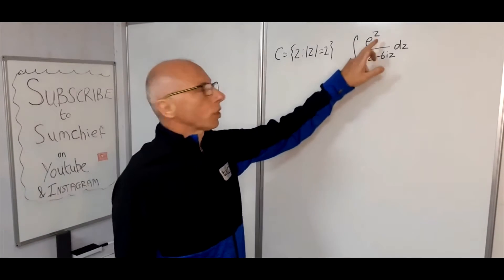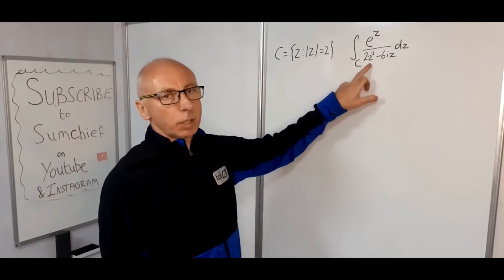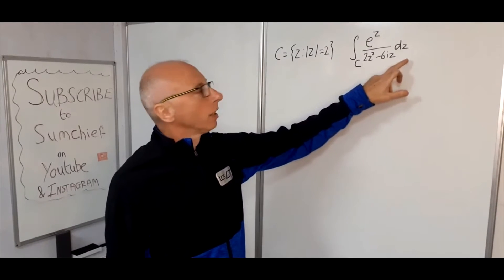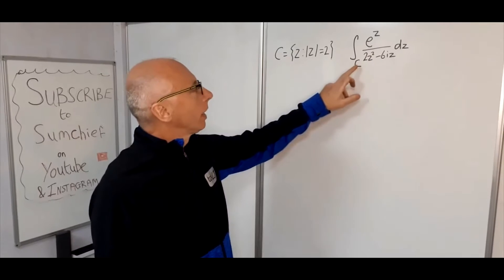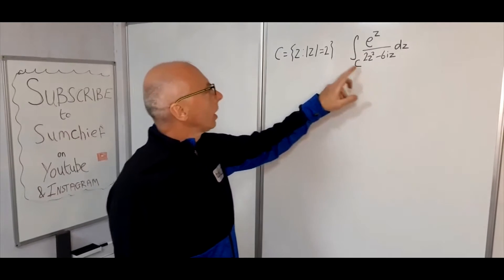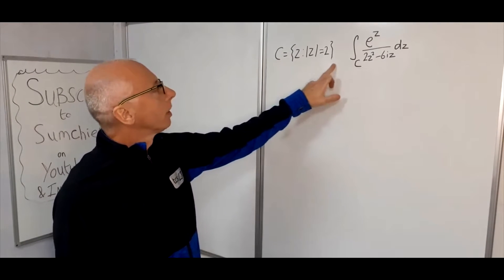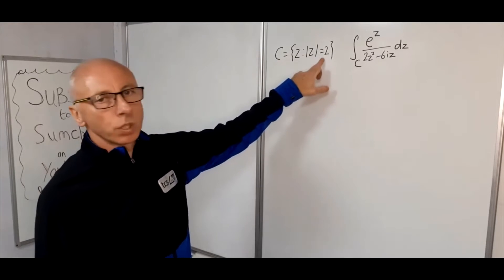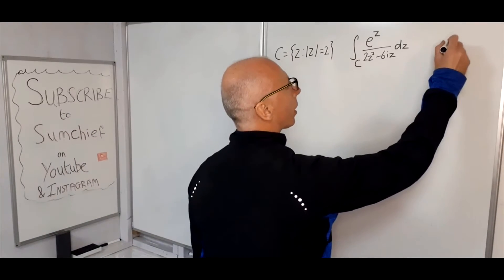Okay, so we're going to integrate this function here, e to the z divided by 2z squared minus 6iz, with respect to z in the closed contour C which is defined here. So modulus of z equals 2. Let's just draw this on a diagram.